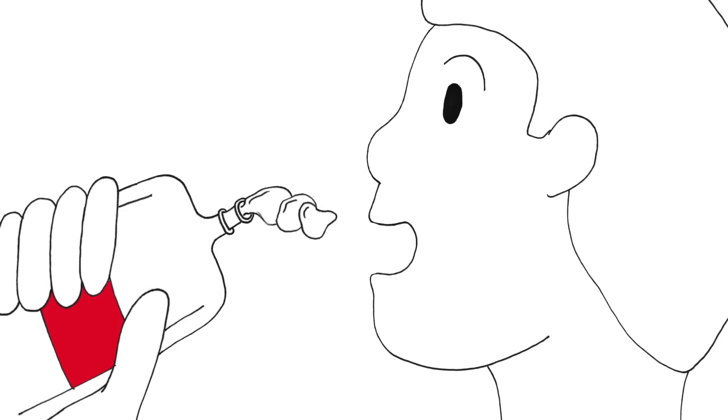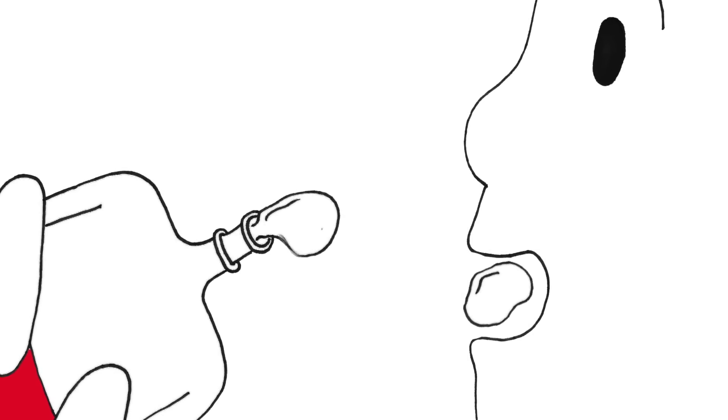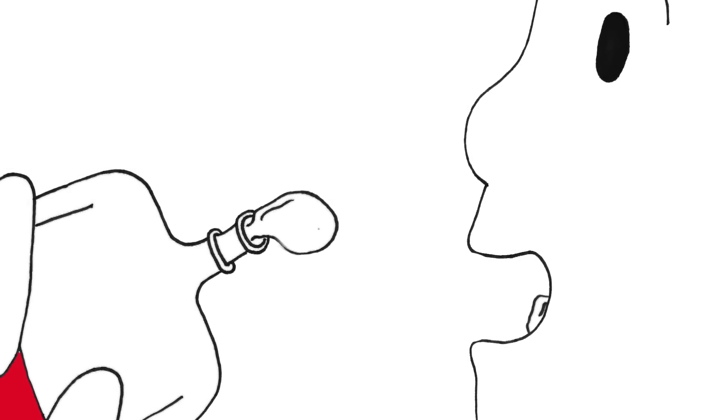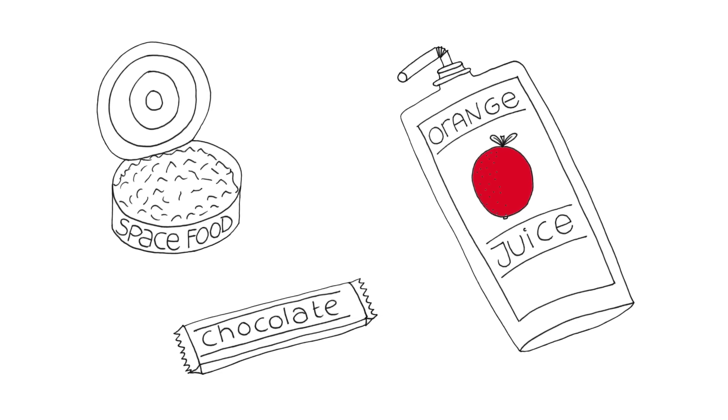We also can't drink as we do on Earth because liquids float around, so either we have to use a straw or we have to catch the bubbles of liquid. Our food is also mostly canned food or it comes dehydrated.